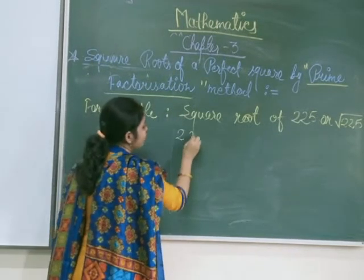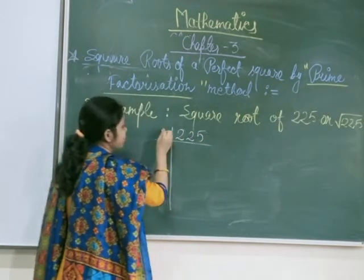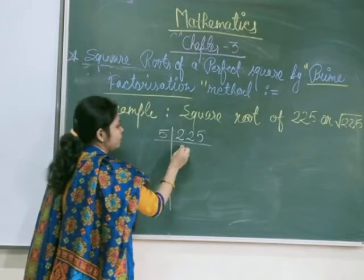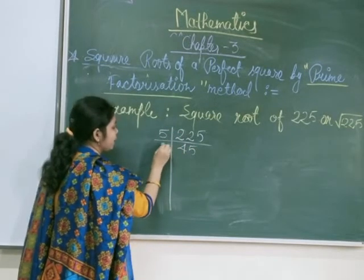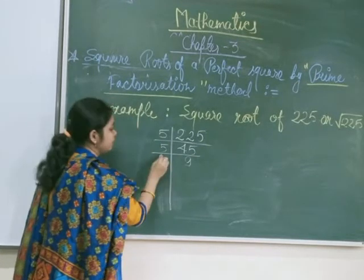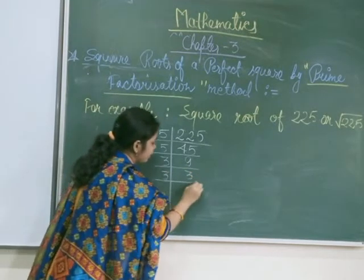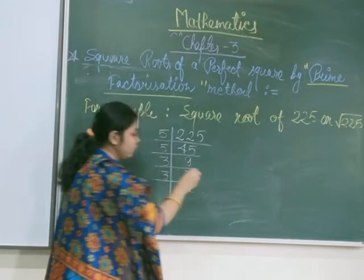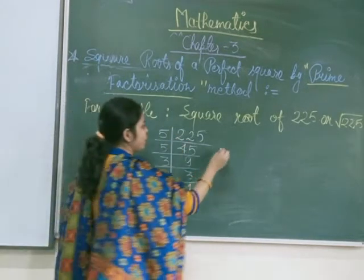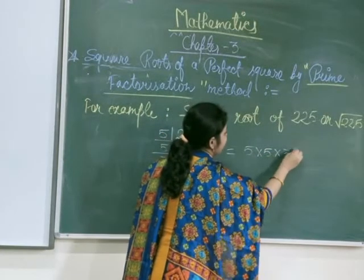So, how we will factorize this 225? At first, we have to divide it by 5. So, what is that? 45. Now, divide by 5 again, we get 9. After that? 3. And we get 3. And at last, what we get? 1. So, the prime factorization of 225 is written as 5 × 5 × 3 × 3.